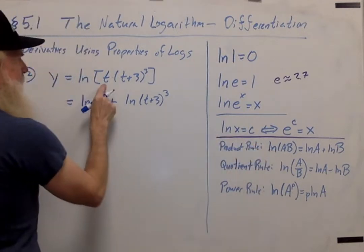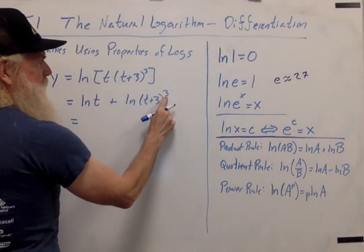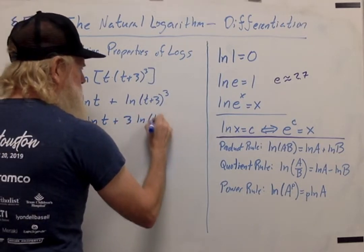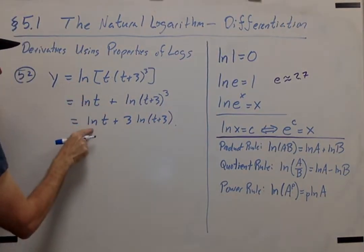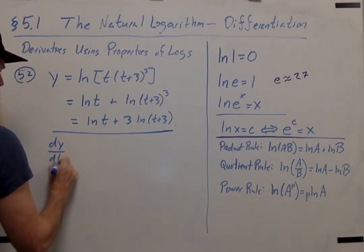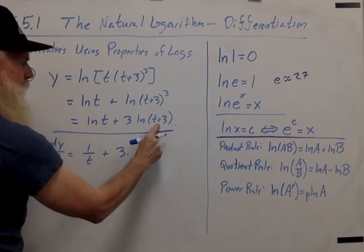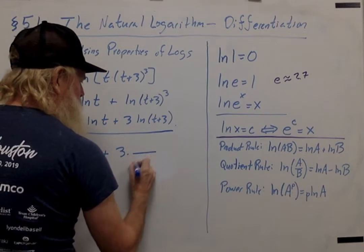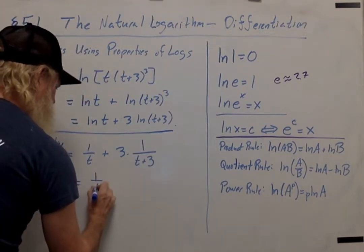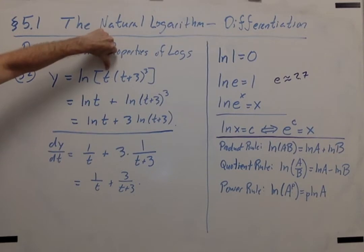In this first formula, I'm letting a represent t and letting b represent (t plus 3) cubed. Then I can apply the power rule to the second term and bring the exponent 3 down as a coefficient of the logarithm. So the original function is equivalent to: natural log of t plus 3 times natural log of (t plus 3). Now let's take the derivative. The derivative of y with respect to t is 1 over t, plus 3 times the derivative of log of (t plus 3), which is 1 over (t plus 3). And that's much easier than differentiating the original function using the chain rule.